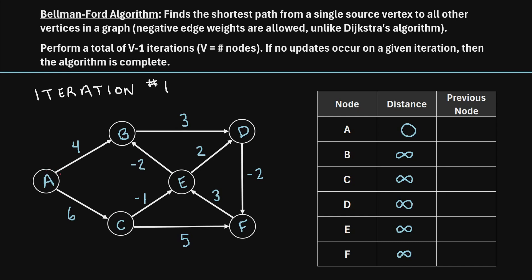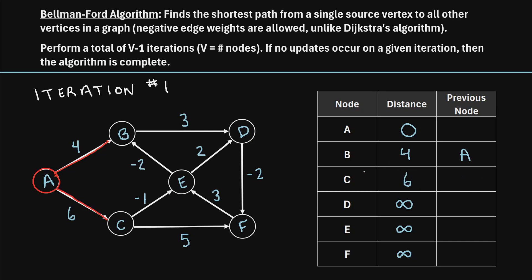Now what we're going to do is loop through each node and travel to every other node that it's connected to. Let's start with node A and travel to every other node it's connected to. We can travel from A to node B, and that's a distance of four. Is four shorter than the current distance shown for node B? Yes, four is shorter than infinity, so we update this distance to four, with the previous node being A. Next, we can travel from A to node C, and that's a distance of six. Six is shorter than infinity, so we update to six, with previous node A.